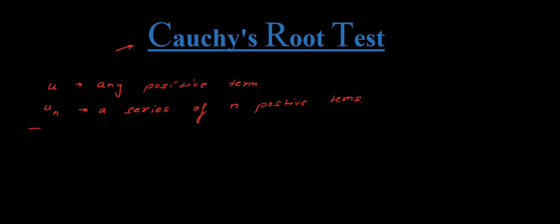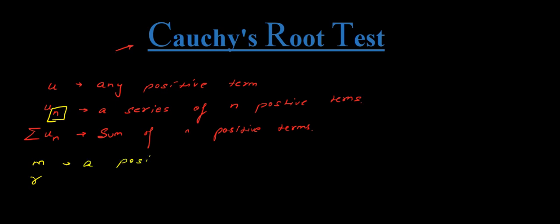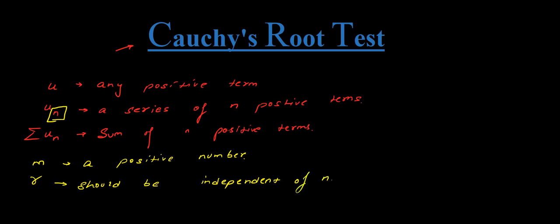We express this as the summation of un, which is the sum of n positive terms. We also require a few more terms: n, m, and r. Here n is the total number of positive terms, m is any another positive number, and r is a number with the condition that r must be independent of n.